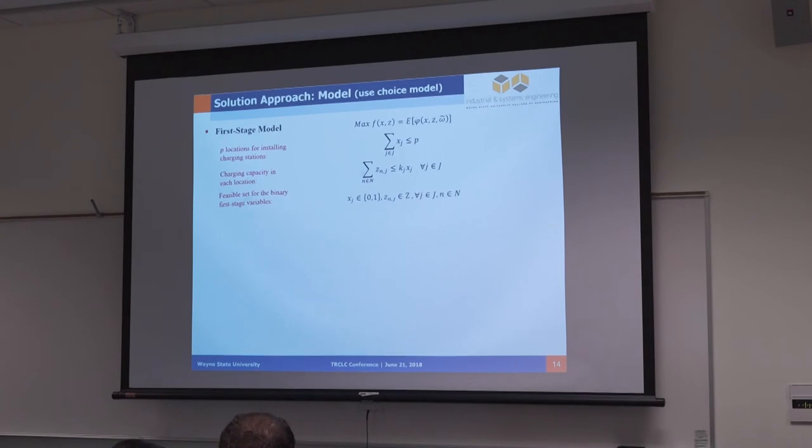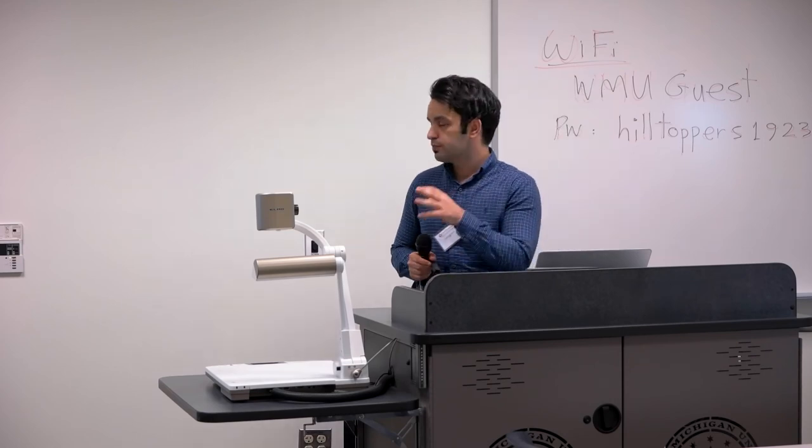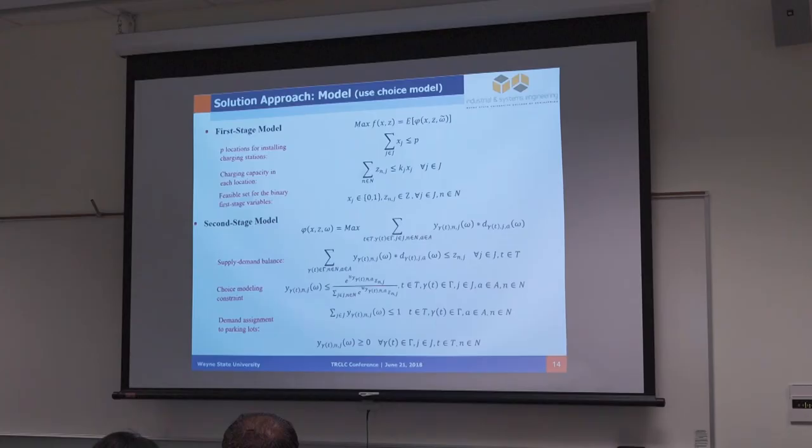In the first stage, we determine where should we locate the charging station and what should be the number and type of each charger. We want to maximize access to charging station. In the second stage, we try to maximize accessibility to charging station. We have supply-demand balance constraint, and as you can see, the choice modeling constraint which is nonlinear, and also demand assignment to parking lots.